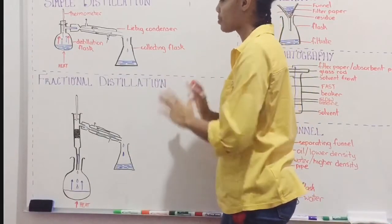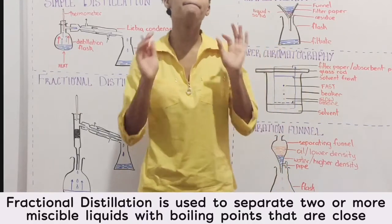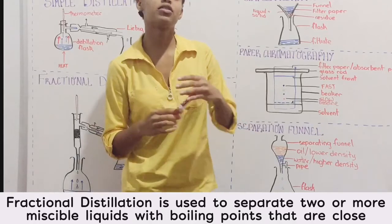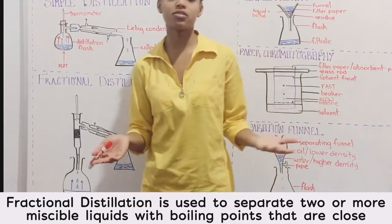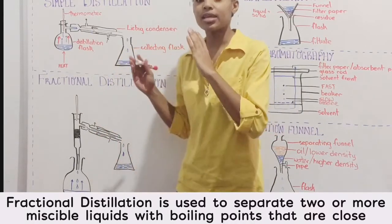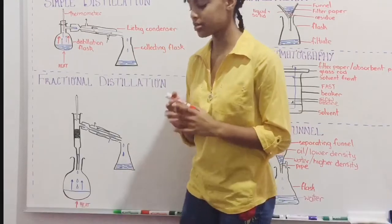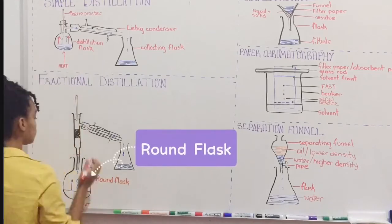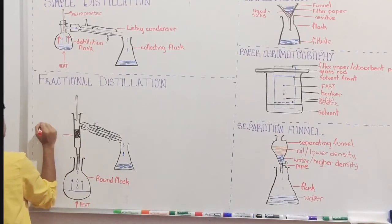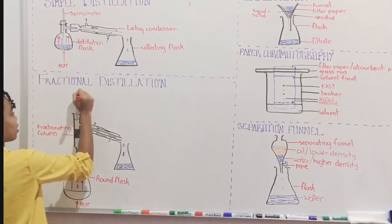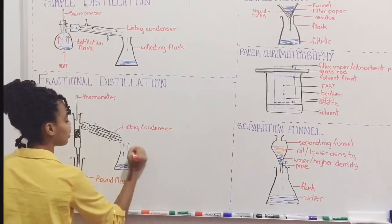Our final method of separation is fractional distillation. The purpose of fractional distillation is to separate two or more miscible liquids that have very similar boiling points — for example, trying to separate a solution of ethanol and water. The boiling point of water is 100 degrees Celsius and the boiling point of ethanol is about 78 degrees Celsius. Here we have our round flask, our fractionating column — which looks like a bundle of beads — our thermometer, our Liebig condenser, and our collecting flask.